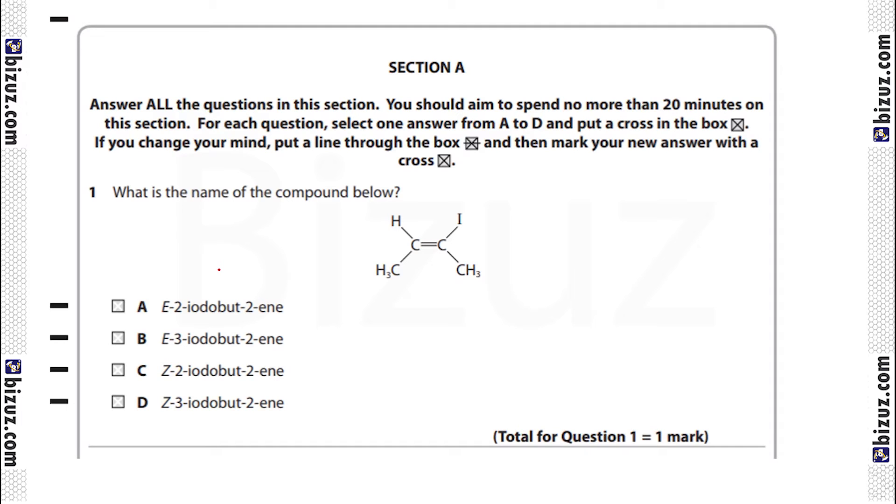The first question: what is the name of the compound below? Look at the compound - it consists of four carbon atoms, so this is 'but', and here is a double bond, so '-en'. The double bond is in the middle, we say 'but-2-ene'.